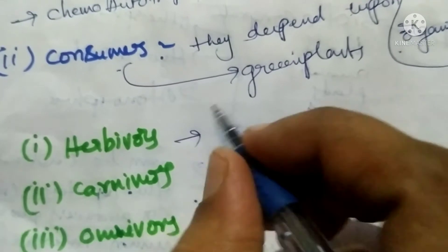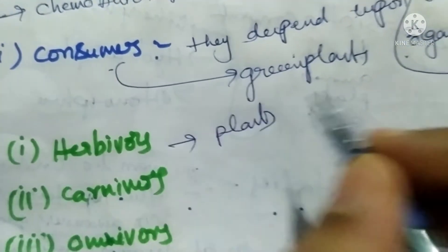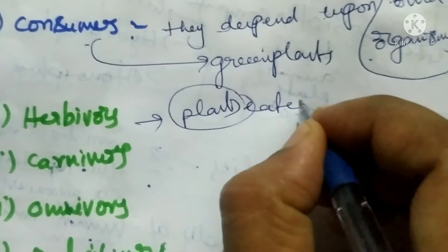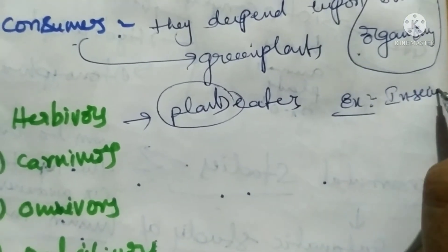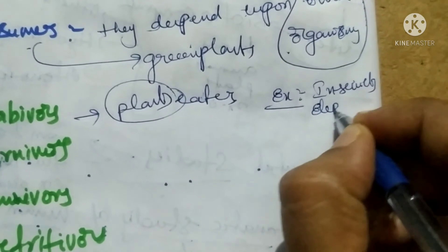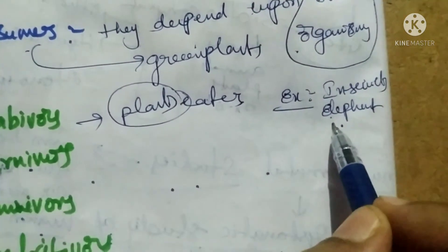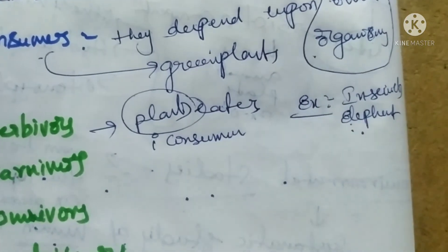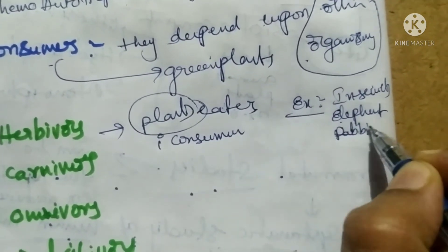Herbivores means the organisms which feed on plants or green plants — they are plant eaters. For example, small insects, elephant — elephant also eats grass only. These herbivores are also called the primary consumers. Examples include insects, elephant, rabbit, etc.